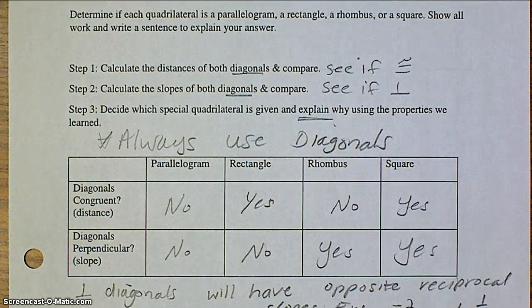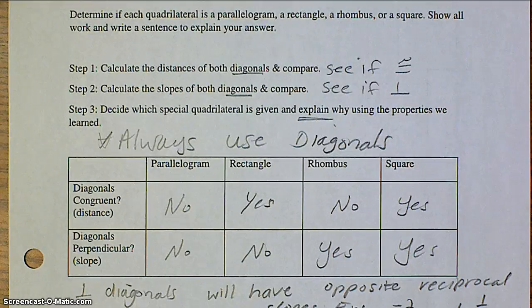Once you've got that, then you can write a sentence, decide and explain which special quadrilateral you have. The key is to make sure you're always using the diagonals.